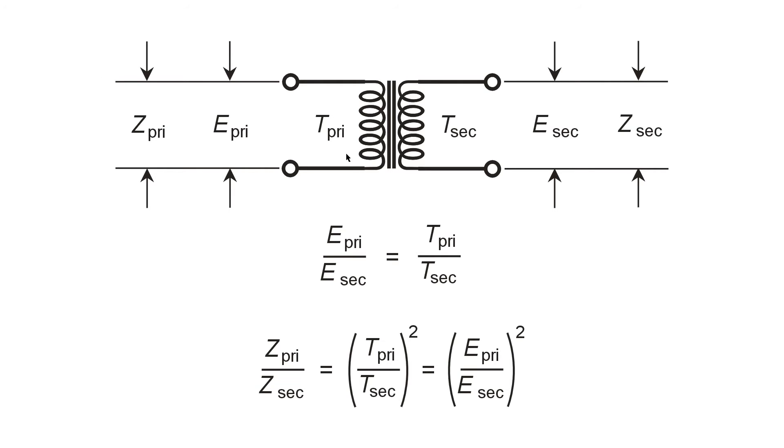So in this case, if you had the 120 to 12 volt transformer with a 10 to 1 primary to secondary turns ratio, the impedance transformation ratio would be 10 to 1 squared, or 100 to 1.